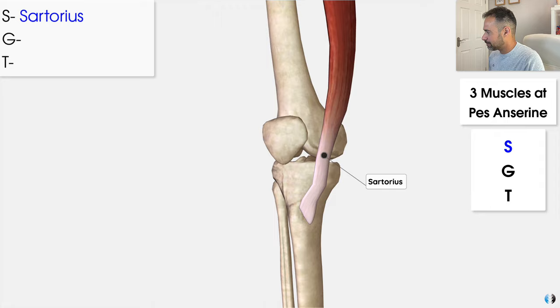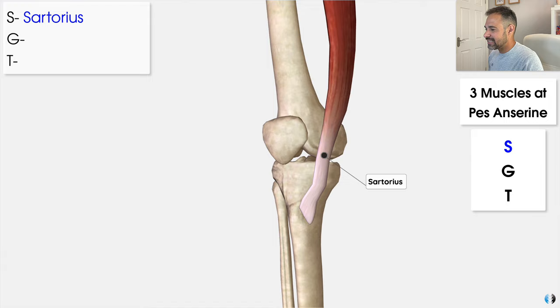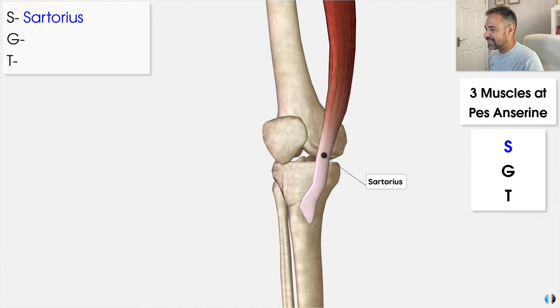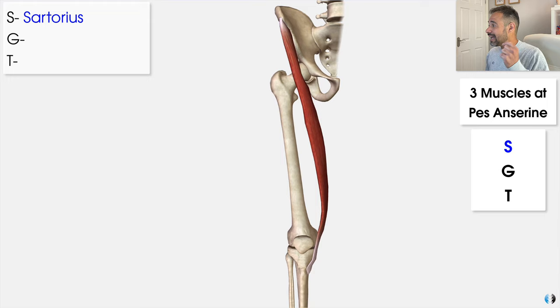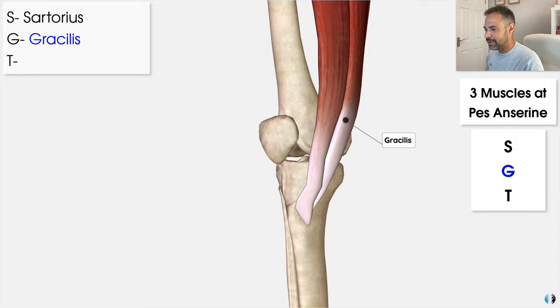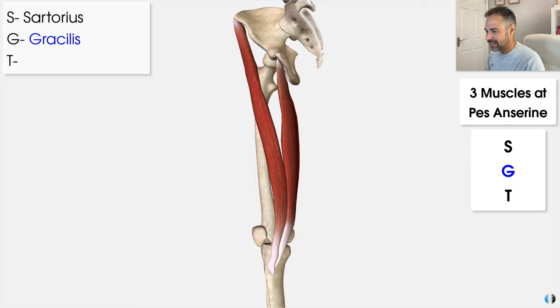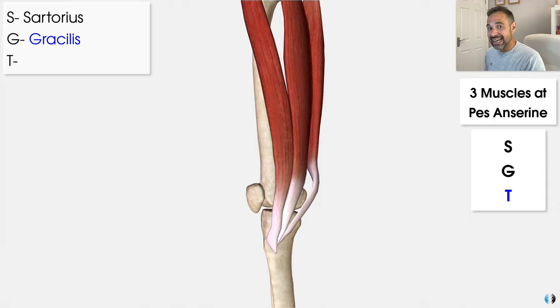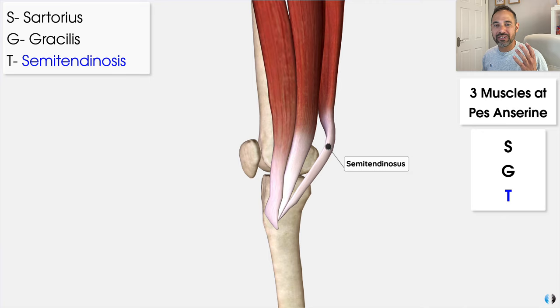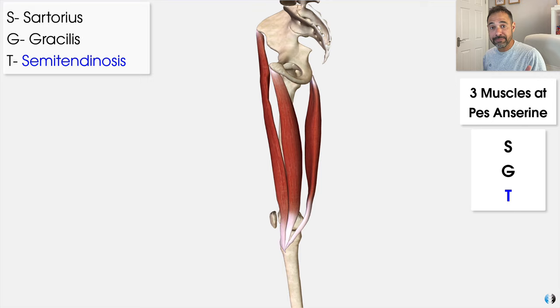S stands for the sartorius muscle — a long and slender muscle that extends down from the anterior portion of the thigh, playing a key role in both hip and knee flexion. G stands for the gracilis muscle, also long and slender, found on the more medial side of the thigh — it contributes to knee flexion but more principally to adduction of the hip. T stands for semitendinosus, one of the hamstring muscles located on the posterior medial side of the thigh, involved in hip extension and knee flexion.